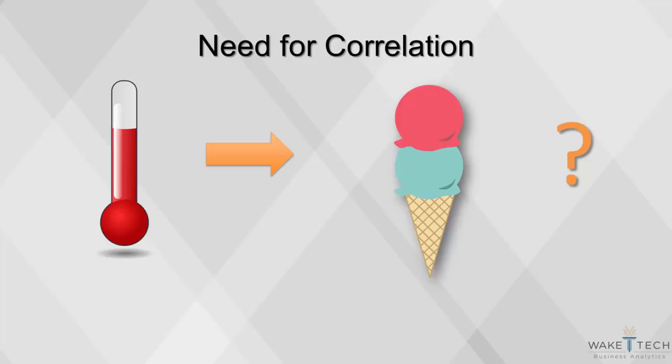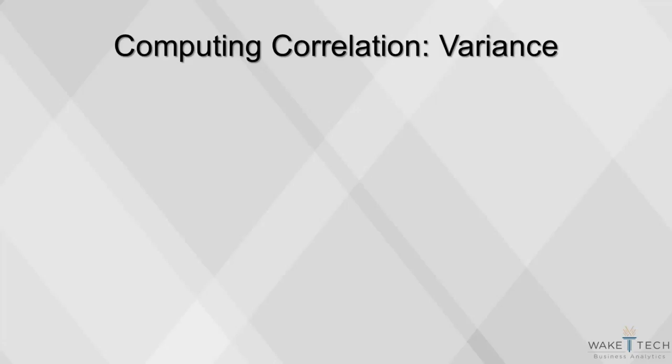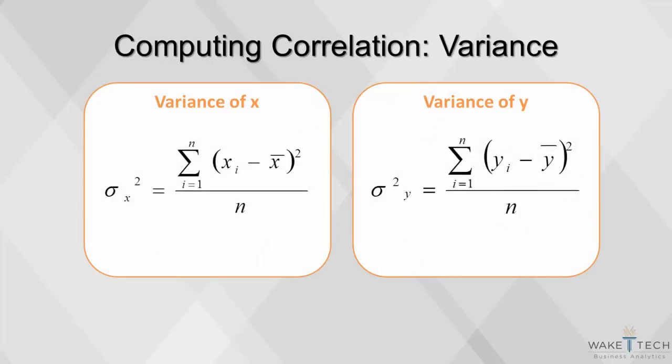How do we quantify the association? While we can guess the relationship, there's a better way to do this using statistical measures. The measure we use is the Pearson correlation coefficient. To compute correlation, we'll need information on standard deviation and covariance.